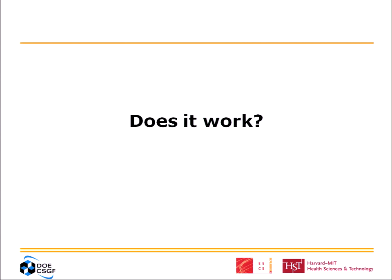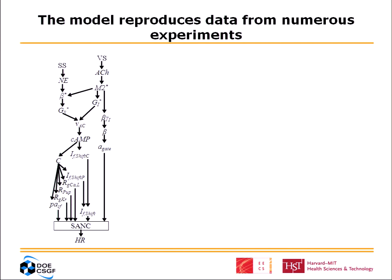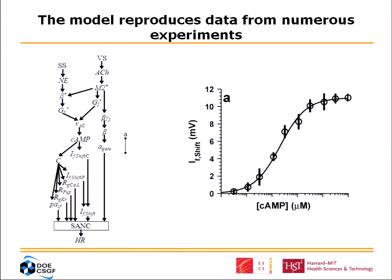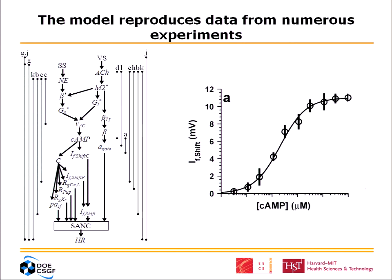We spent a lot of energy and effort in defining each component to reproduce the experimental data, but once you couple them all together, you have no guarantee that it's actually going to reproduce the high-level behaviors that you want. But luckily it does. Here's an illustration of the whole cascade — each arrow is actually a function that defines the relationship between the state variables, shown with letters. The lines with two bullets indicate experiments that controlled cAMP and measured a parameter like the If shift. You have the data points showing If shift as a function of cAMP, and the solid line is our model reproduction of this. We have a number of experiments that span various parts of this cascade, and all of them are reproduced very well.